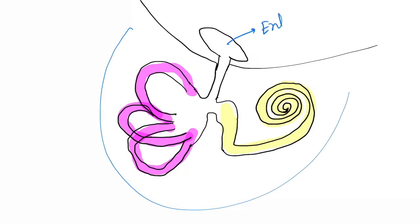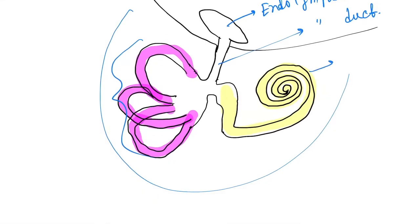In the inner ear, there is this system. This is called the endolymphatic sac, this is the endolymphatic duct, these three are semicircular canals. This is the cochlea, and this portion, the whole thing, is the vestibule.